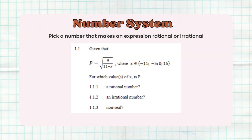Starting with number systems — this is basically revision from grade 10. The only thing you need to understand from that section is how to identify when a number is rational or irrational. So this is the type of question they can ask you — that's the only thing you need to understand. Now moving to quadratic equations.